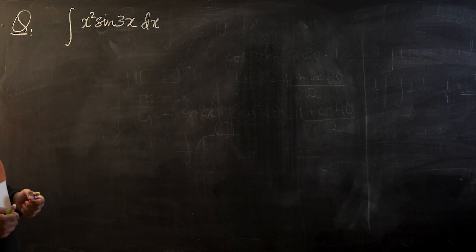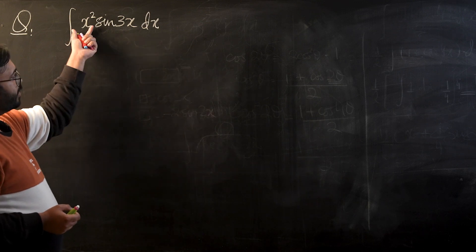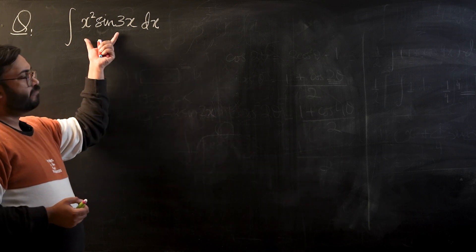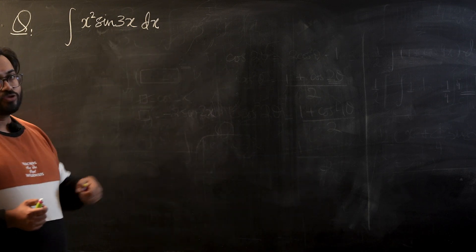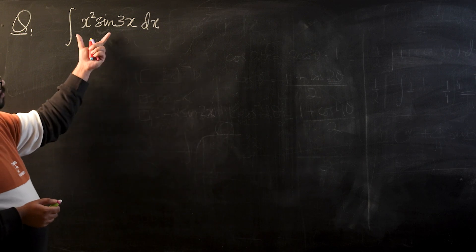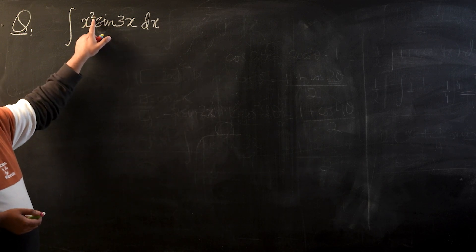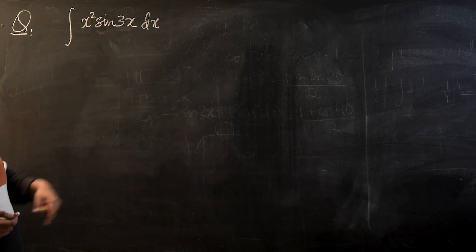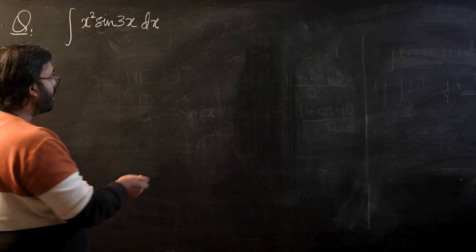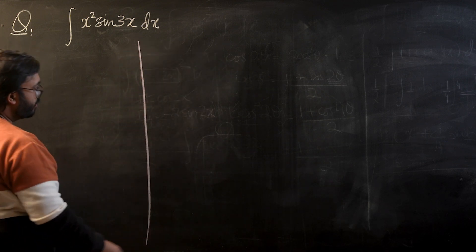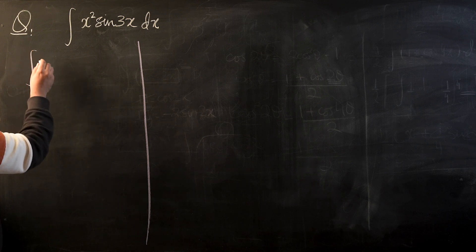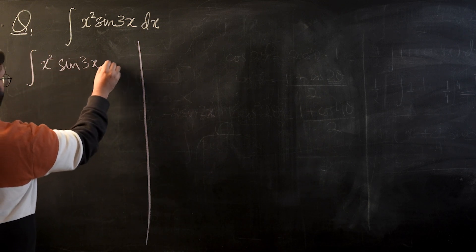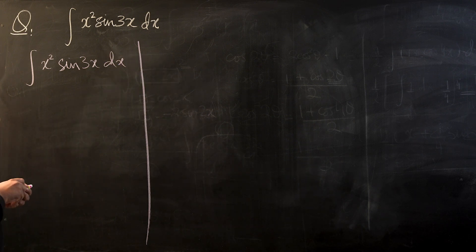We can clearly see that there is a product of two different terms — x squared and sine 3x — but it's not always wise to jump straight onto the product rule, the ILATE rule. What we will do is spend some time analyzing whether either of the two operators would work or not. If the power rule works we use that, if sine works we use that, and if both fail, that is when we will try integration by parts.